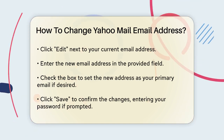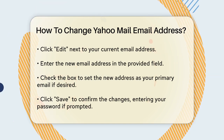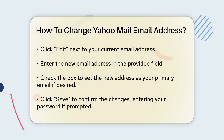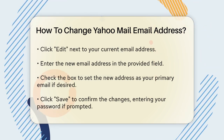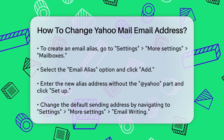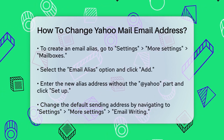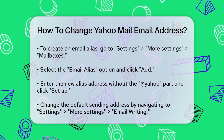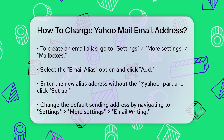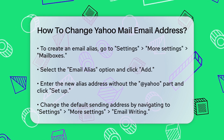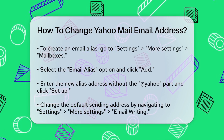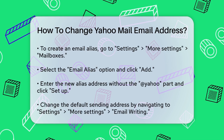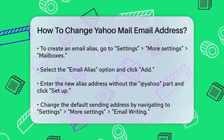If you're looking to create an email alias instead of changing your primary email address, you can do that too. An alias is like an additional email address that forwards emails to your primary account. To create an alias, go to Settings, More Settings, Mailboxes, and find the Email Alias option. Click Add and enter the new alias address without the Yahoo part. Then click Set up and provide the necessary details like name and description.